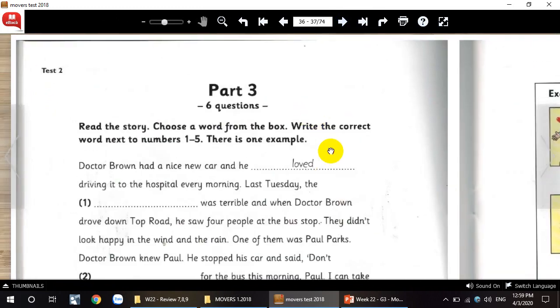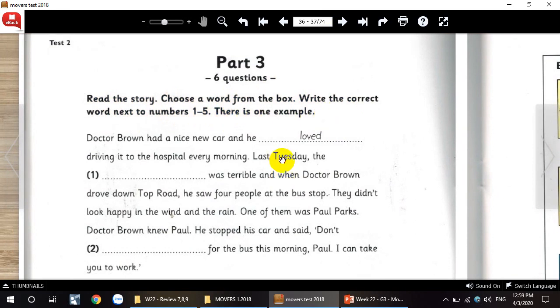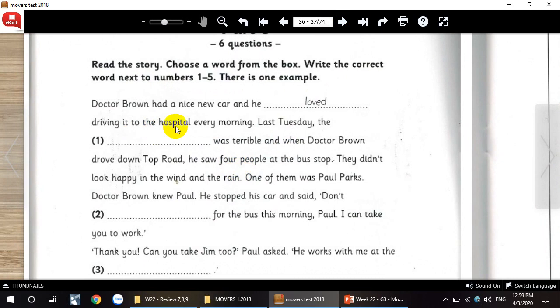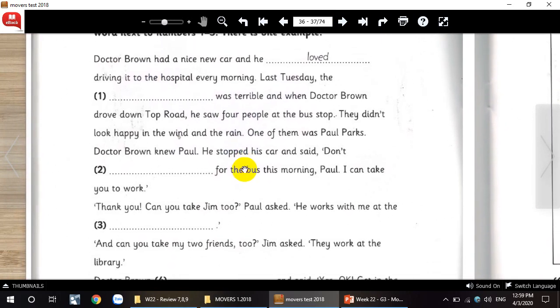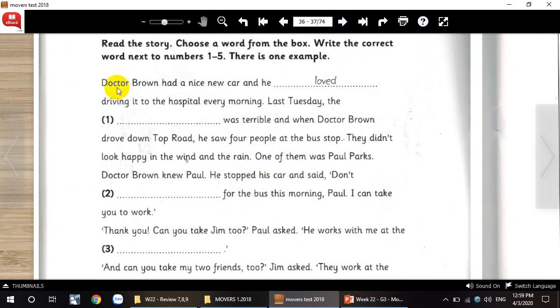Part three. We have six questions. Read the story. Choose a word from the box. Write the correct word next to the numbers one, two, five. This one is sample.